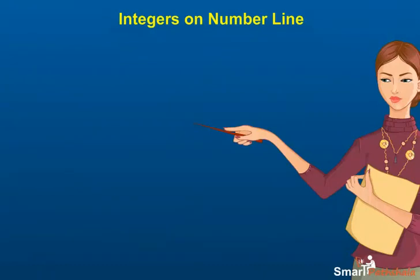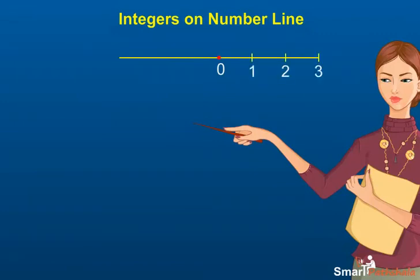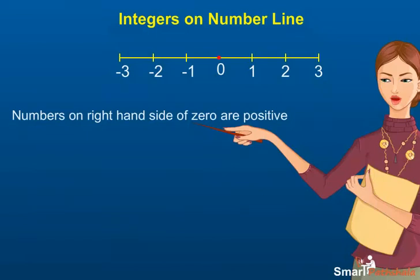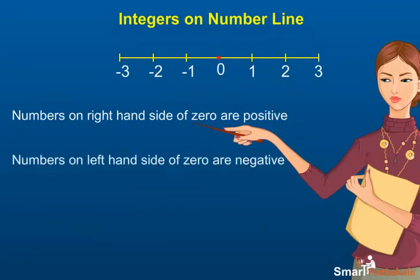Let us represent integers on the number line. We first draw a straight line and mark a point O in the middle. O represents 0. Now we write natural numbers starting from 1, 2, 3 on the right side of 0 at equal distances. Now we write negative numbers minus 1, minus 2, minus 3 on the left side of 0 at equal distances. Thus, we can say that all numbers on the right-hand side of 0 are positive and on the left side are negative.